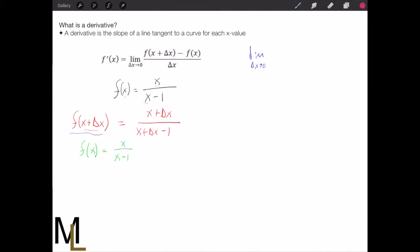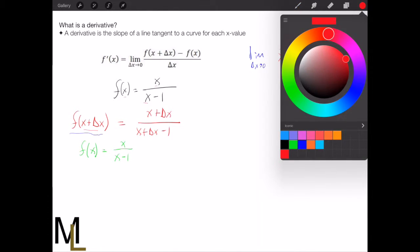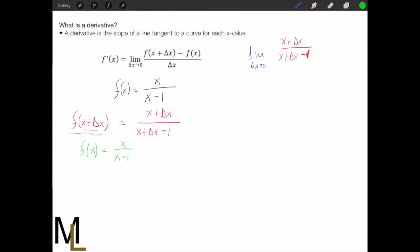So he was given as x plus delta x over x plus delta x minus 1. And then we subtract f of x, right? According to this formula right here.